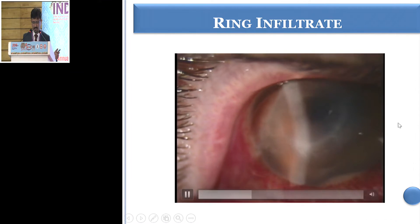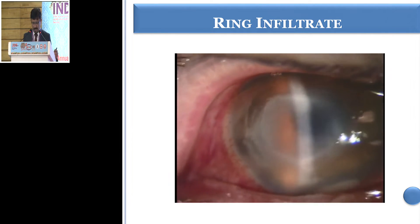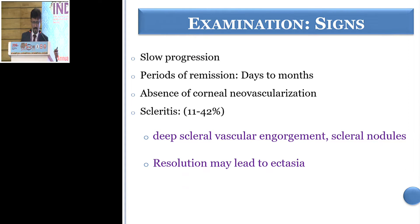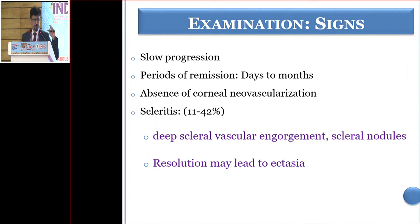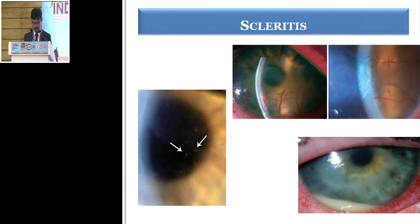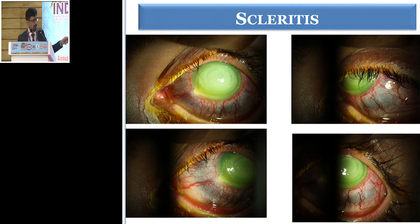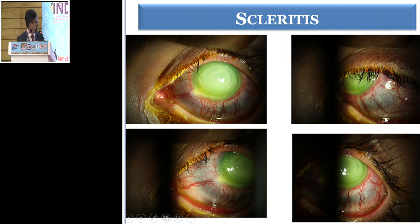This is an example of a ring infiltrate seen in an early phase of acanthamoeba keratitis, not as late as shown in the earlier photograph. Normally, you can have a ring infiltrate even in Pseudomonas keratitis, but in Pseudomonas the progression is very fast, whereas in acanthamoeba the progression is not that fast. The inflammation may appear a little later and is not as severe. There can be scleritis in these cases, and neovascularization in the periphery as seen in this case.